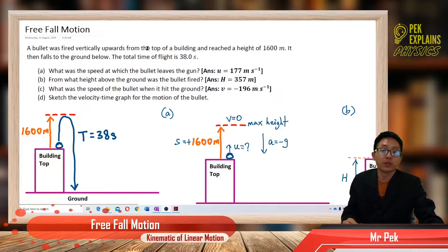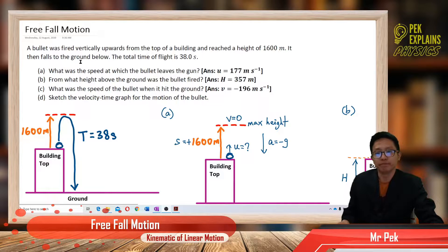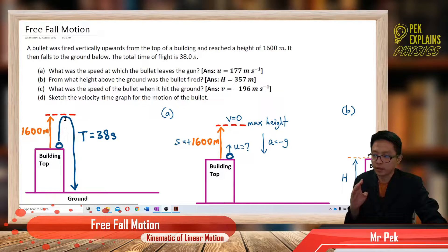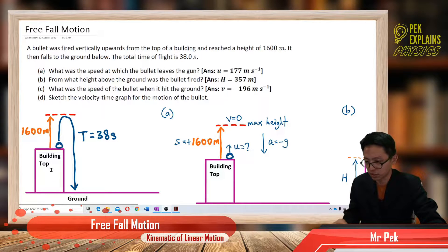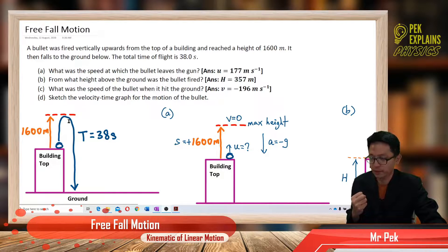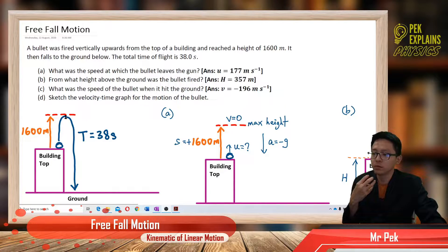A bullet was fired vertically upwards from the top of a building and reached a height of 1600 meters. It then falls to the ground below. The total time of flight is 38 seconds. The bullet goes from the top of the building until it reaches the maximum height of 1600 meters, and then falls back down to the ground. There is a picture to illustrate this situation — we should always draw a picture to visualize the situation.